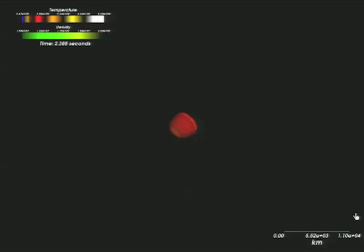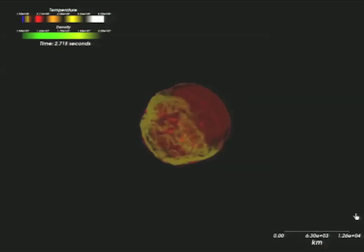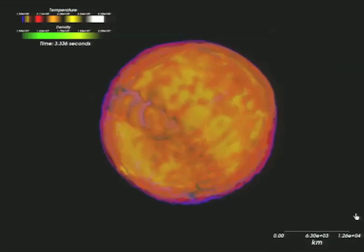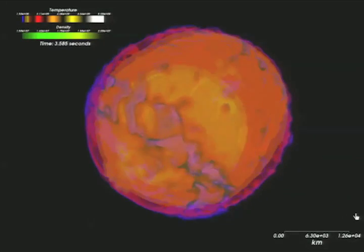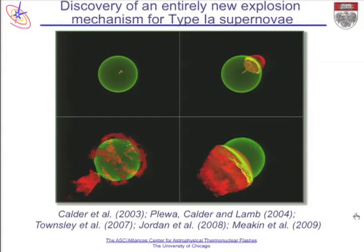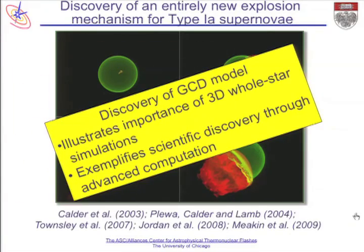You saw the detonation wave sweep through the star in a quarter to a half a second. We then backed up by an order of magnitude in distance so you can see the final expansion of the remnant. This discovery really illustrates the importance of doing high-fidelity simulations in three dimensions, and it exemplifies the kind of scientific discoveries that high-performance computing can make possible that aren't really possible in other ways.